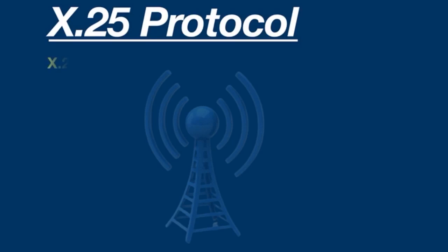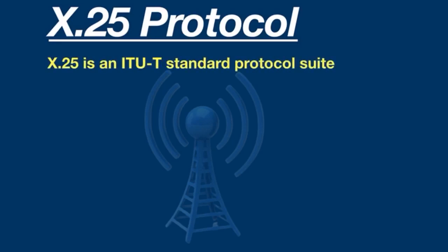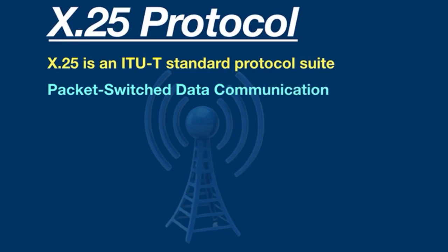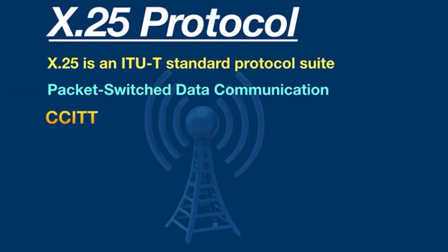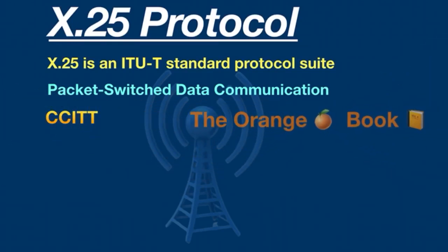X.25 is an International Telecommunication Union standard protocol suite for packet-switched data communication. It was originally defined by the Consultative Committee for International Telegraph and Telephone in a series of drafts and finalized in a publication known as The Orange Book in 1976.